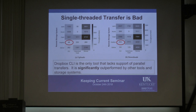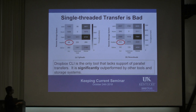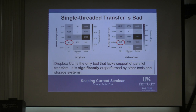It was not taking advantage of the capabilities of the end system, yielding very bad performance for both uploads and downloads using their dedicated CLI tool. That was a surprise to us. The generic tools outperformed it — we got almost two orders of magnitude faster using tools that were not purpose-built for Dropbox.